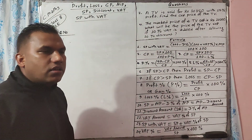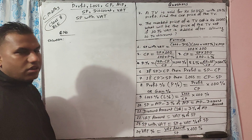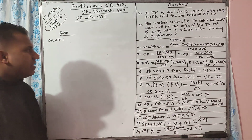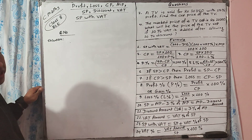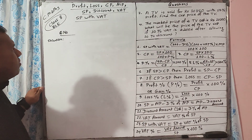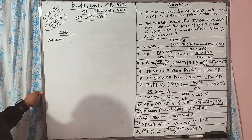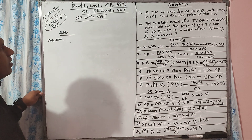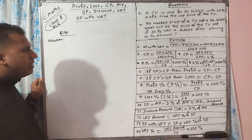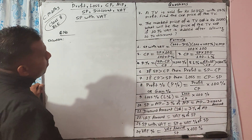Okay students, good morning. Today we will do some questions from Mathematics, class 8. Today's topic is about Profit, Cost Price (CP), Marked Price (MP), Selling Price (SP), Discount, VAT and SP with VAT. Let's start question number 3.